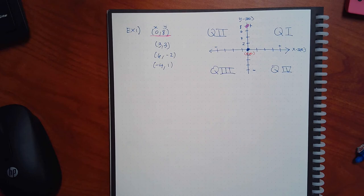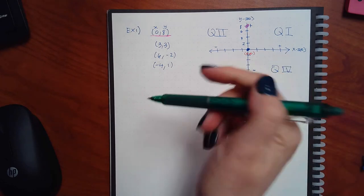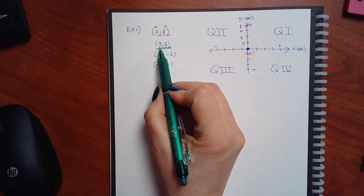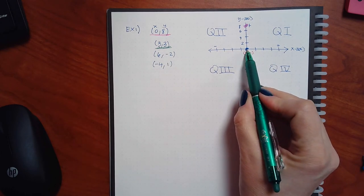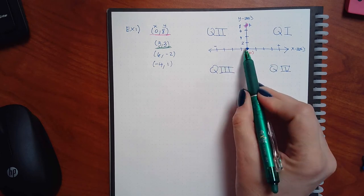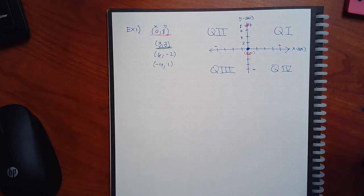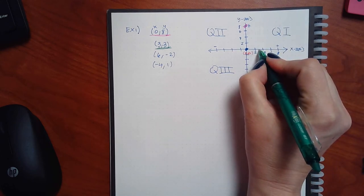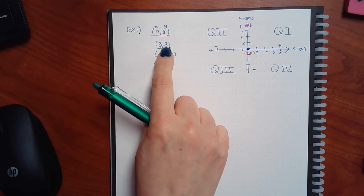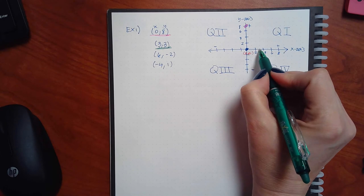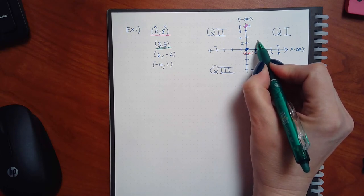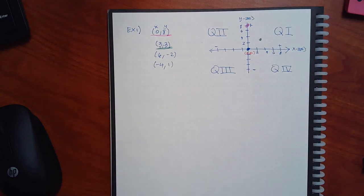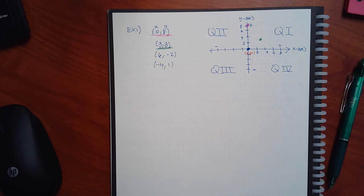One dot for each ordered pair. For the point (3, 3) in green: the x value is positive three so from the center I'm going to the right. I go right three — but I can't put a dot there yet because I haven't finished the whole point. The x is three AND the y is three, so not only do I move right three but I also move up three. Where that lands is the point (3, 3).